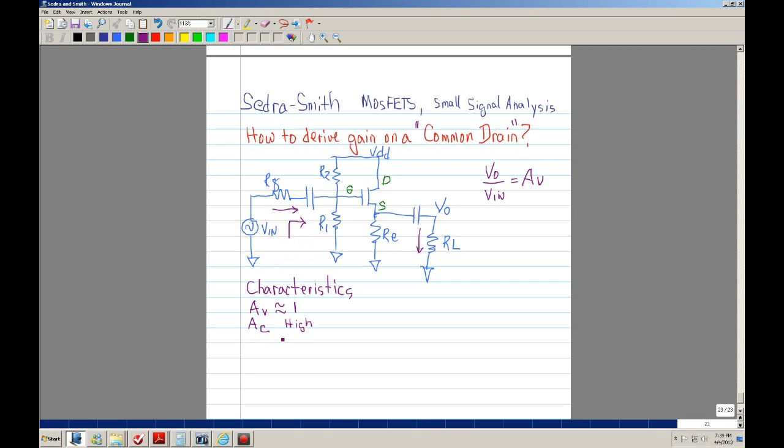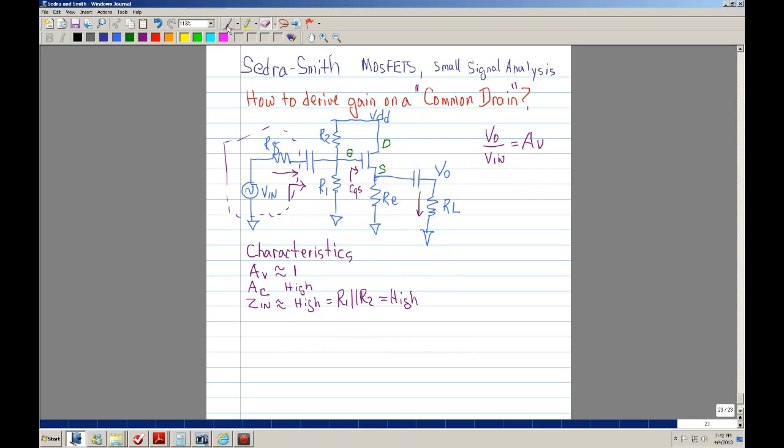Another characteristic is that when you look in here, Zin is typically high. In this case just by inspection, if you look into the gate you actually have a capacitor CGS and CGS is open, and assuming that this capacitor is shorted, so what you're really looking at is R1 and R2 in parallel. Typically you want to make R1 and R2 high. So you want Zin high. Let's go ahead and derive this.